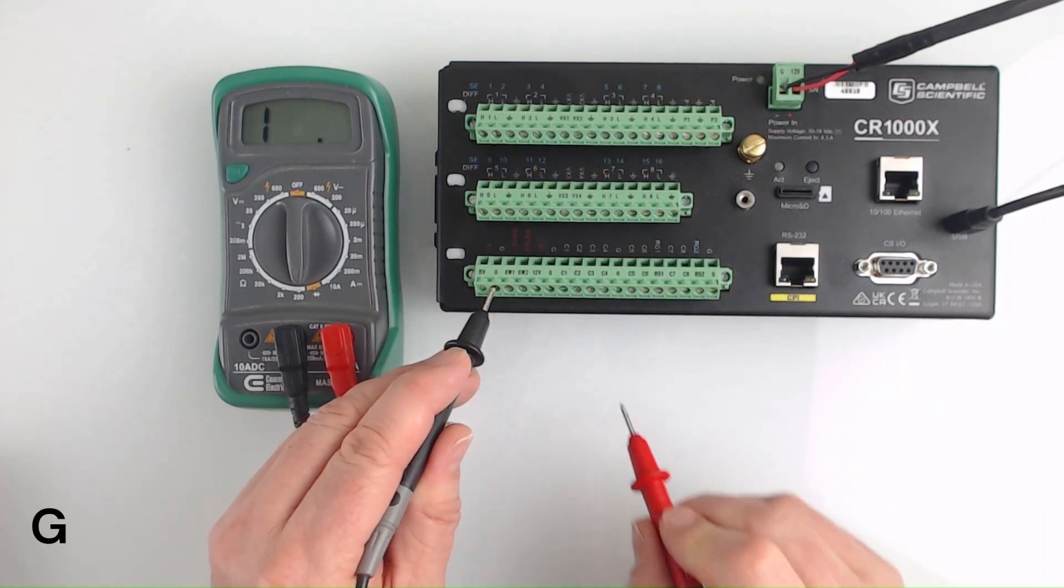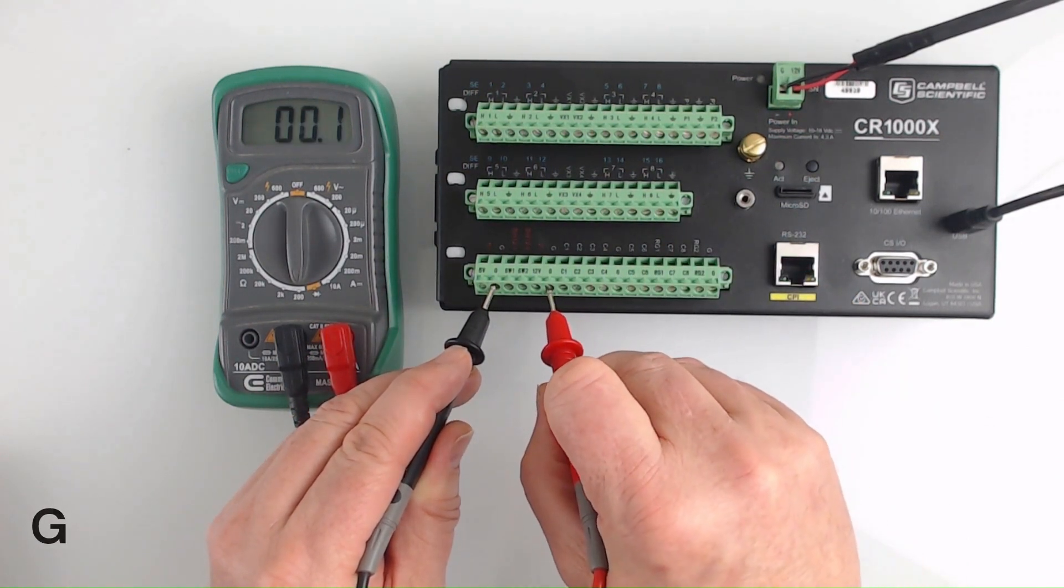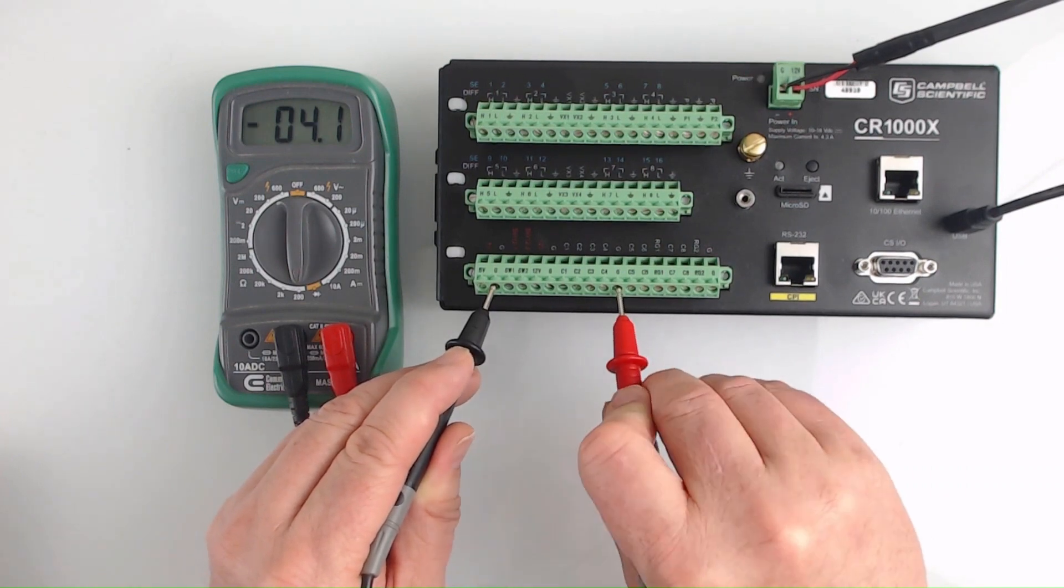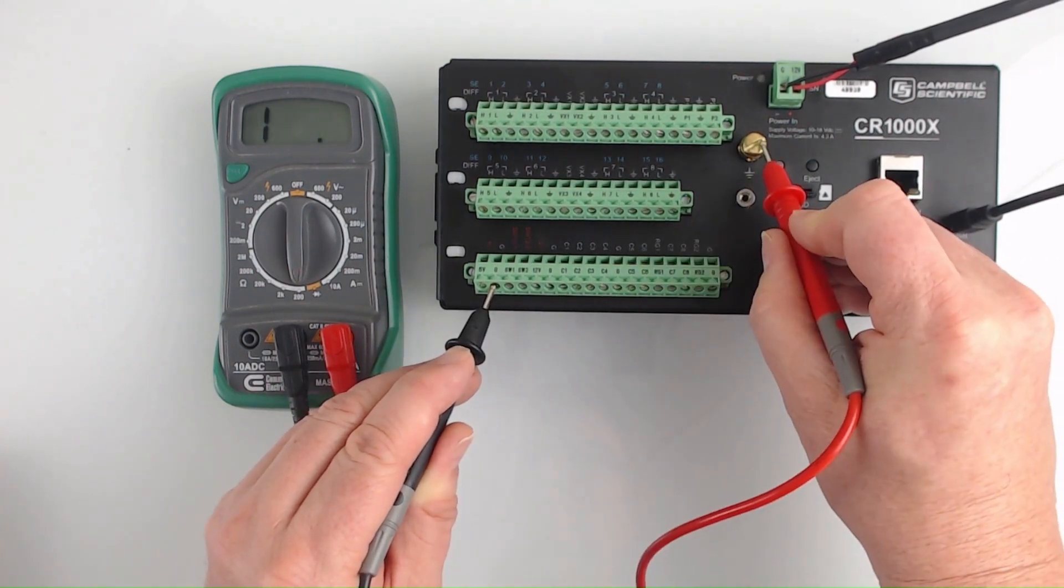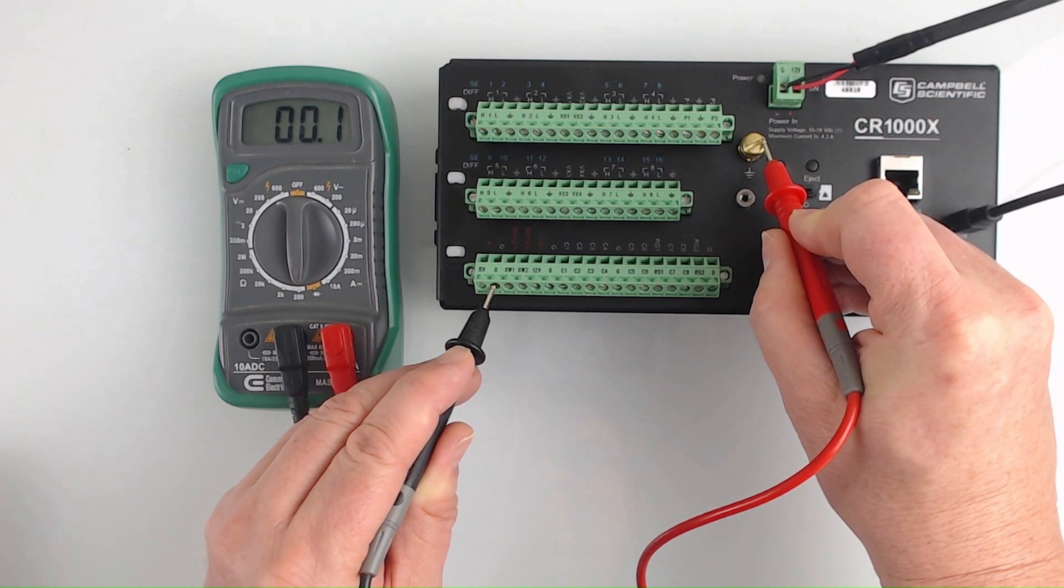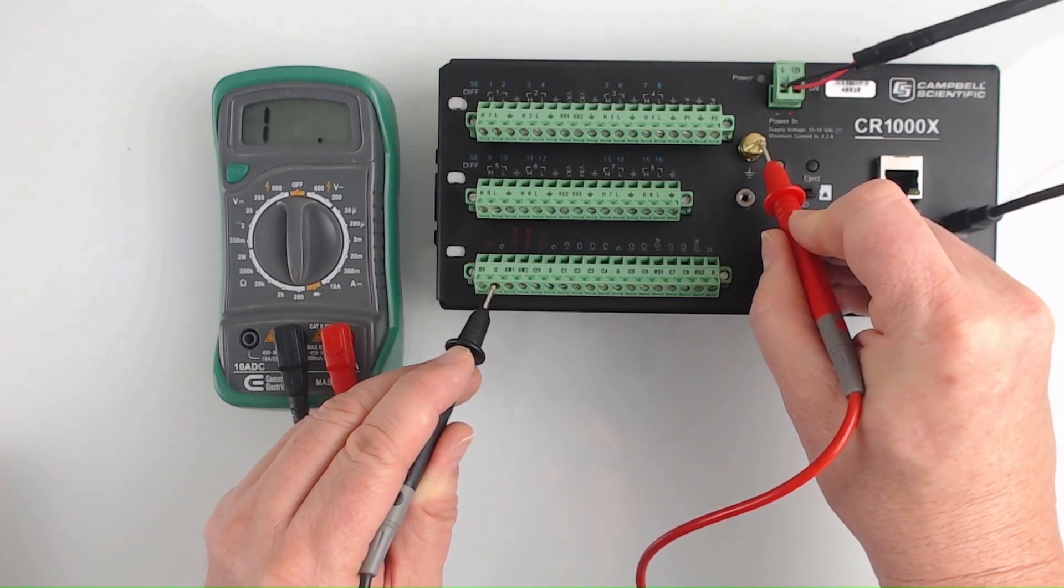Similarly the channels labeled G are called power ground and are all connected to each other and to the ground lug. If you detect a break in continuity between the signal ground or power ground channel and the ground lug contact Campbell Scientific to arrange for repair of your datalogger.